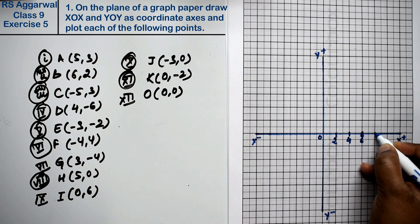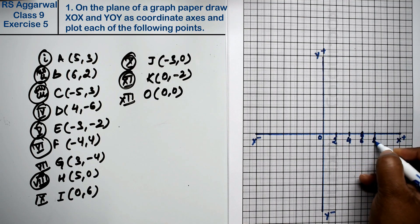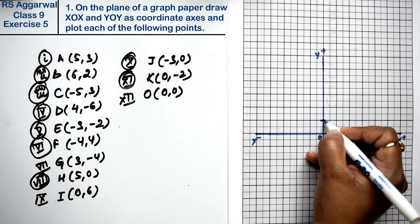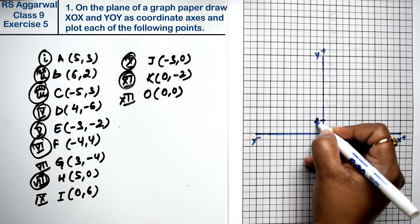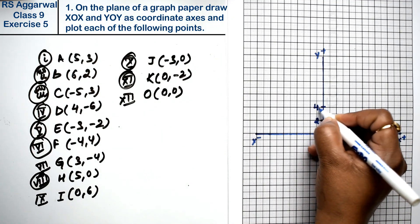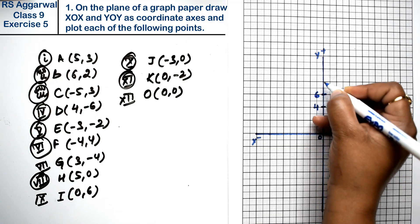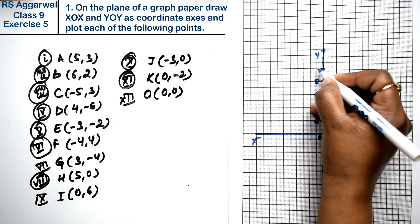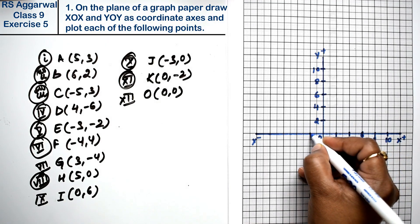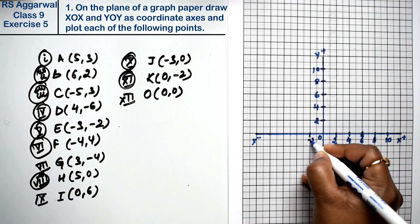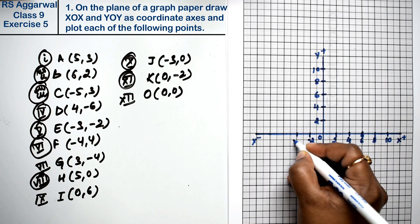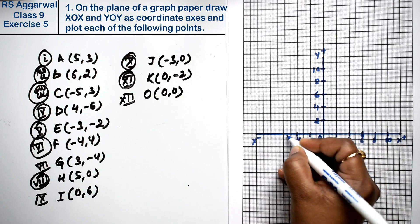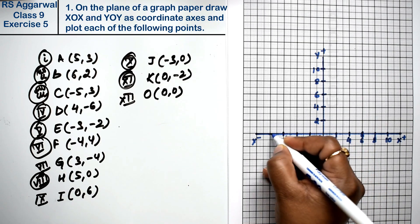On the positive x-axis, we mark: 2, 4, 6, 8, and 10. Similarly on the positive y-axis: 2, 4, 6, 8, and 10. On the negative y-axis we mark: minus 2, minus 4, minus 6, minus 8.